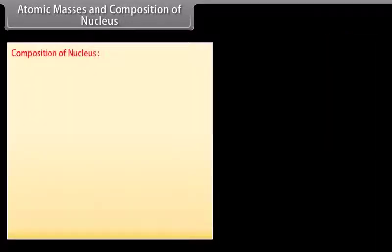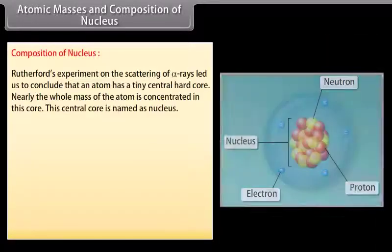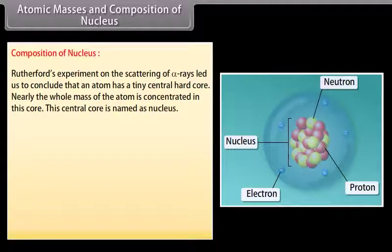Composition of nucleus. Rutherford's experiment on the scattering of alpha rays led us to conclude that an atom has a tiny central hard core. Nearly the whole mass of the atom is concentrated in this core. This central core is named as nucleus.